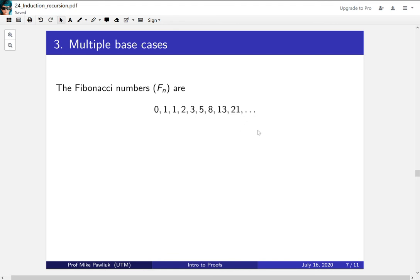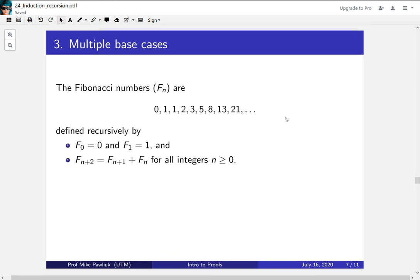It's 13 plus 21, which is 34. So this is a recursively defined sequence, but it's recursively defined in terms of the two previous things. So the definition for that is F₀ is 0, F₁ is 1. These are the base cases if you want.